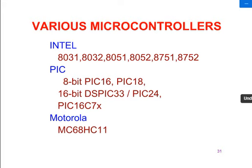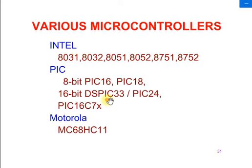The Intel microcontrollers are like 8031, 8032, and generally we use the 8051, 8052, and even 89C51. For PIC microcontrollers: PIC 8-bit, PIC 16, PIC 18 — these are 8-bit PICs. So PIC 16 is 8-bit; don't be confused with 16-bit. PIC 16 is an 8-bit peripheral interface controller. PIC 16 and PIC 18 are the model numbers, not the bit width. The 16-bit category is DSP.